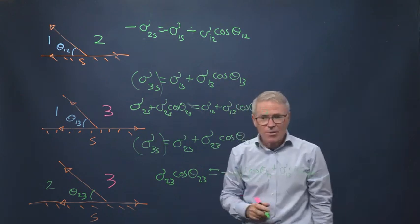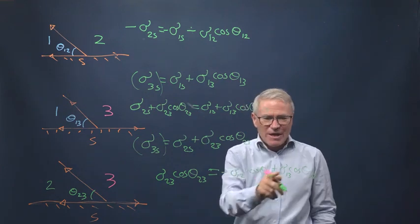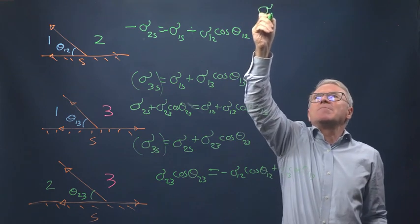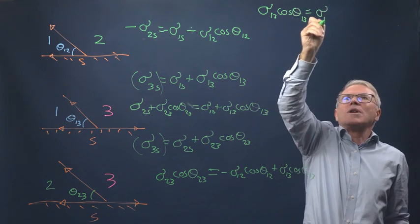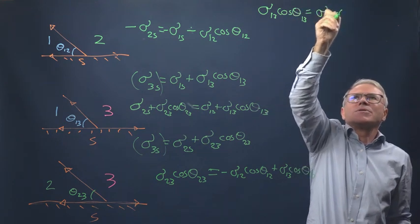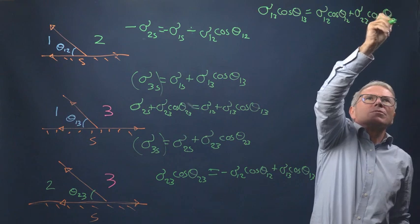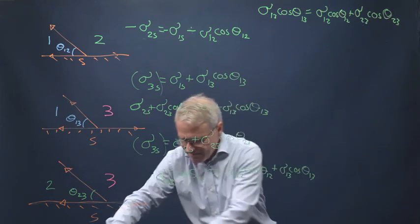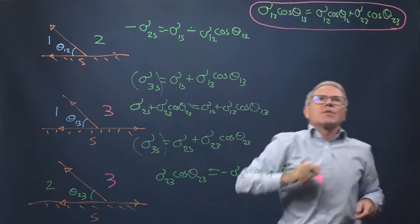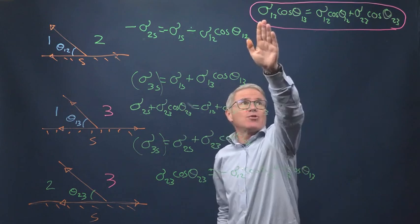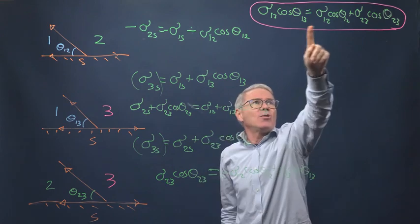Let's write it at the top because it's the key equation for today: sigma 1,3 cos theta 1,3 equals sigma 1,2 cos theta 1,2 plus sigma 2,3 cos theta 2,3. That's a rather interesting relationship which relates the interfacial tensions, which can be measured, and the contact angles.